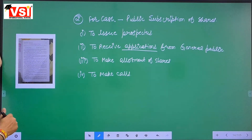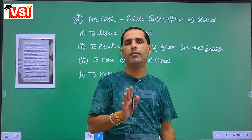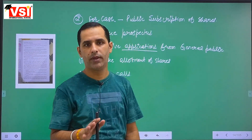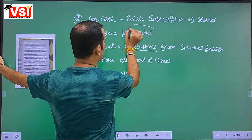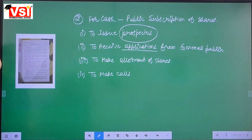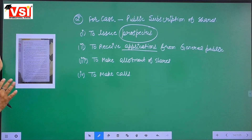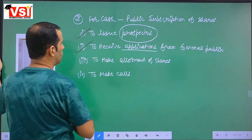Where does the public deposit the application money? The amount of share application money must be deposited by the public in a scheduled bank. The company opens an account in a scheduled bank, and the applicants go and deposit the money in the company's scheduled bank account. The bank's name, account number, and branch are stated in the prospectus.